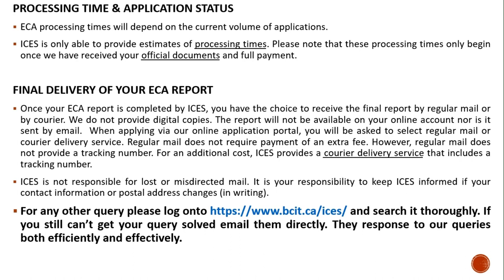Final delivery of your ECA report: once your ECA report is completed by ISAS, you have the choice to receive the final report by regular mail or by courier. We do not provide digital copies — the report will not be available on your online account nor is it sent by email. Regular mail does not require an extra fee but does not provide a tracking number. For an additional cost, ISAS provides a courier delivery service that includes a tracking number. ISAS is not responsible for lost or misdirected mail. It is your responsibility to keep ISAS informed in writing if your contact information or postal address changes.